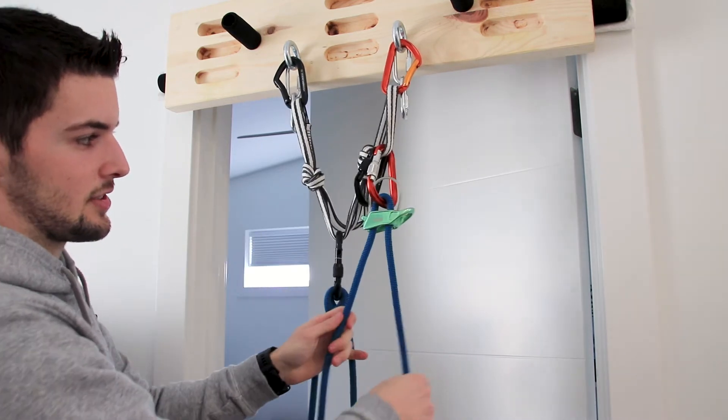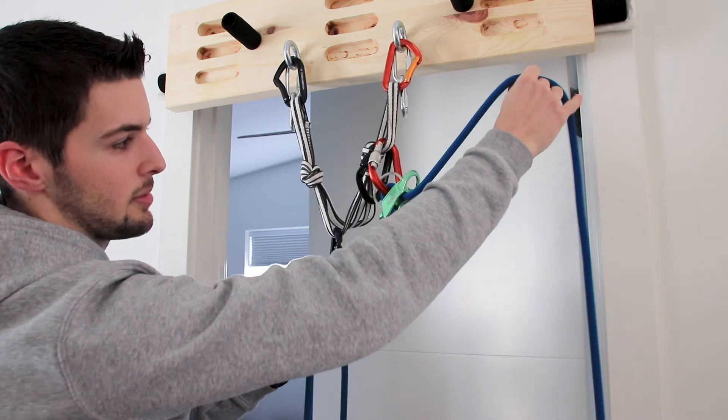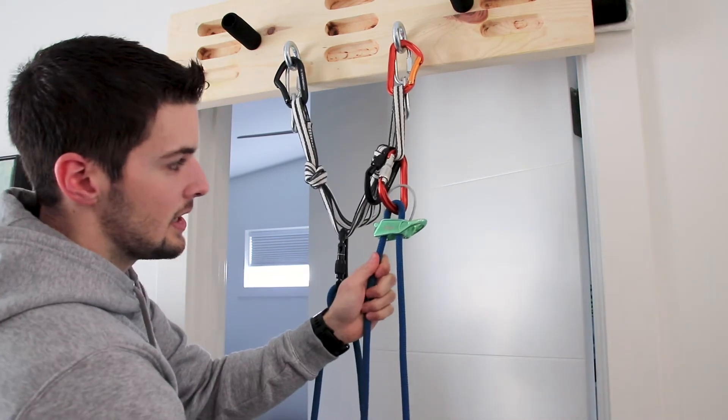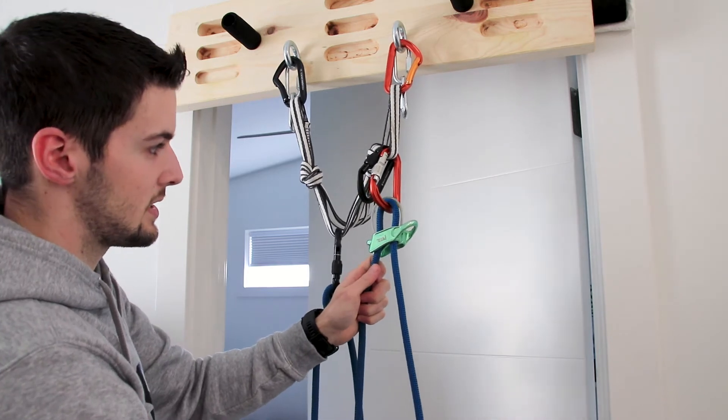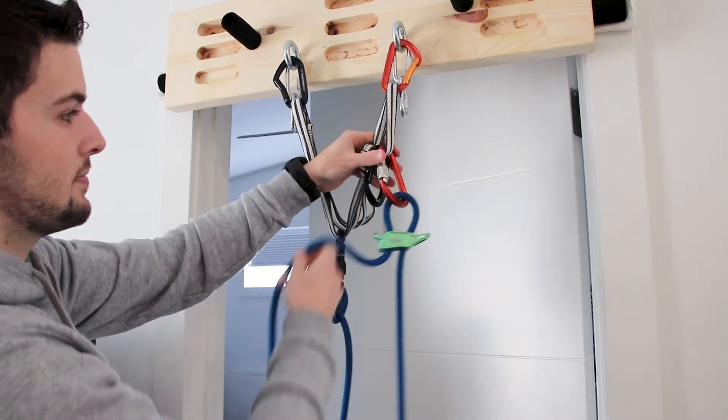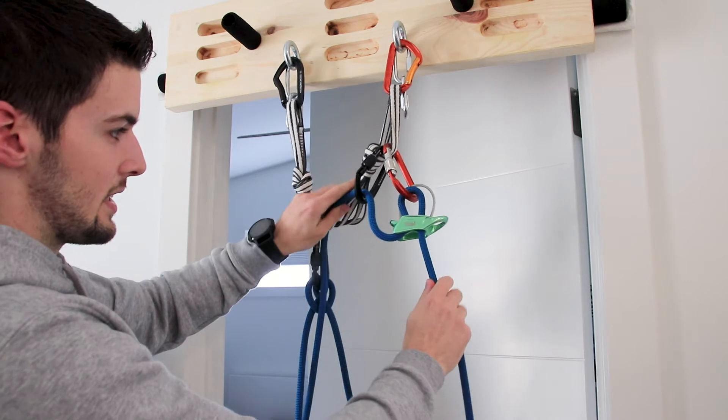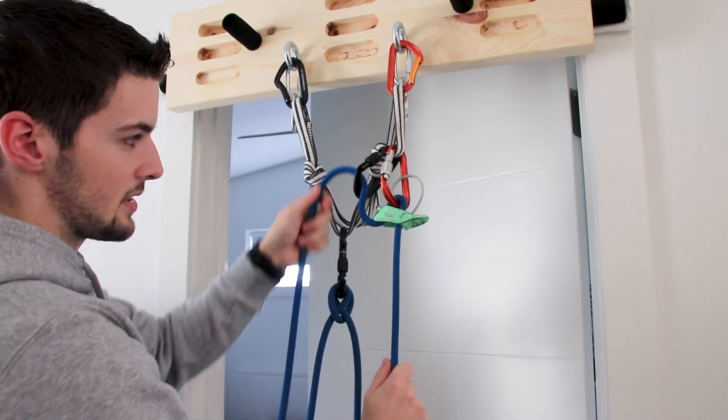If we didn't use a brake strand redirect and the climber fell before getting to the first drop, it's just going over the carabiner and not really actually using the belay device. So by using the redirect it keeps your climber safe until they get to the first drop.